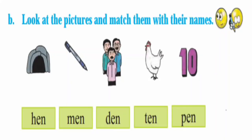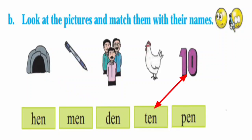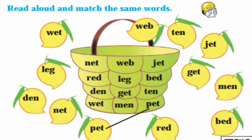Look at the pictures and match them with their names. Chitra paha aani ten jan awashi zhoda lava. Hen, Men, Den, Ten, Pen. And match the same words. Shabda vacha aani sarkha shabdaan chha zhoda lava.